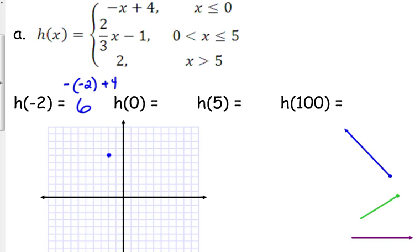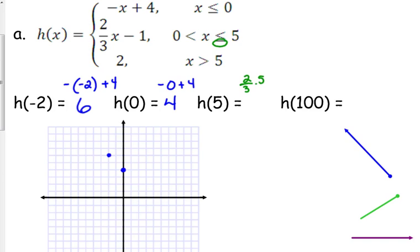For h of 0, that's also the first piece. Zero doesn't have a negative, so that's just 0 plus 4, which is 4. That is an actual defined point. For h of 5, it fits into the second piece, so we have two-thirds times 5 minus 1. That's 10 thirds minus 1, which gives you 7 thirds — about 2 and a third.